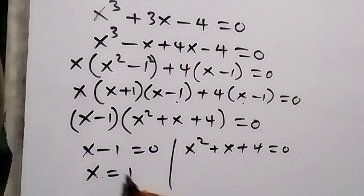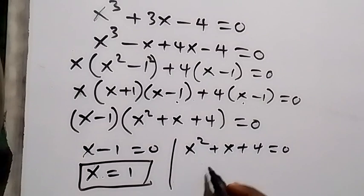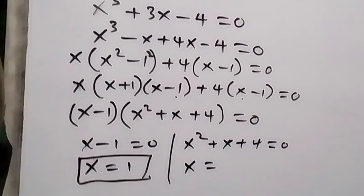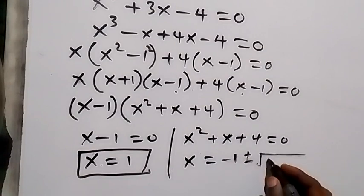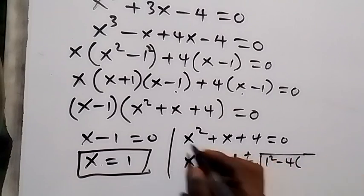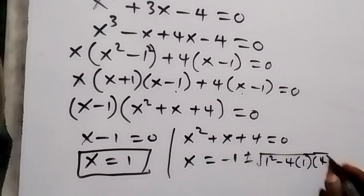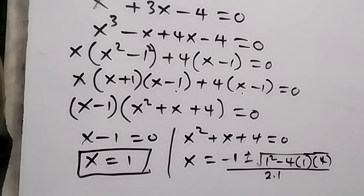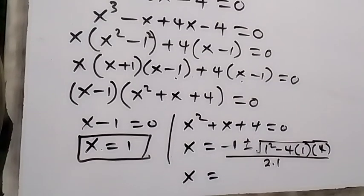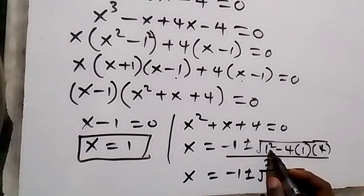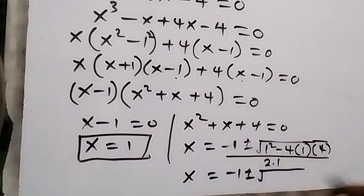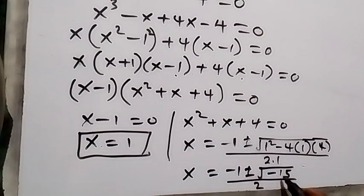From x − 1 = 0, we get x = 1. For x² + x + 4 = 0, we apply the quadratic formula: x = (−b ± √(b² − 4ac)) / 2a, where b = 1, a = 1, c = 4. This gives x = (−1 ± √(1 − 16)) / 2 = (−1 ± √(−15)) / 2.